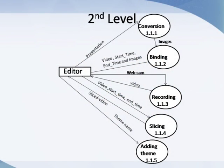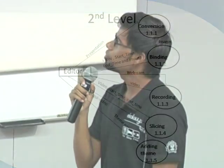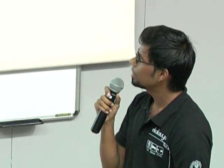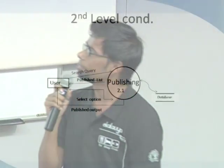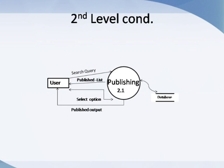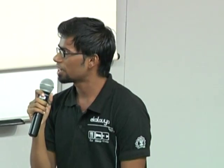It has four sorts of responsibilities, and the whole editing tool is comprised of five jobs: conversion, binding, recording, slicing, and adding themes. This is the DFD for a user — you can enter a search query and the published list is shown. You can select the lecture and view the lecture.